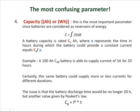A battery capacity is rated C-X in ampere-hour, where X represents the time in hours during which the battery could provide a constant current equal to C-X divided by X. For example, a 100 ampere-hour C20 battery is able to supply a current of 5 amperes for 20 hours. The same battery could supply more or less current for different durations, but the discharge time will no longer be 20 hours — it will be given by Peukert's Law: C-P equals I to the power K times T.